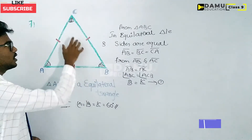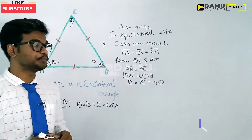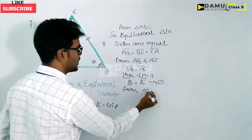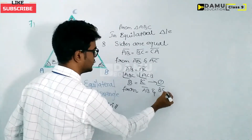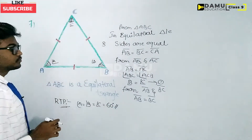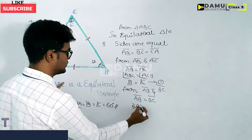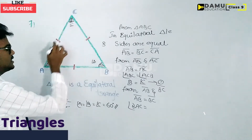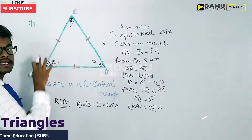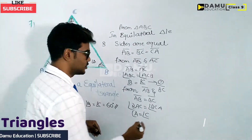Next combination: from sides AB and BC — since AB equals BC — the opposite angles for these two sides are equal. Angle BAC will be equal to angle BCA. So angle A will be equal to angle C. Let us call this equation 2.